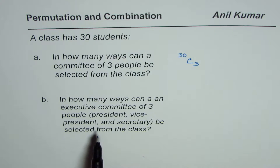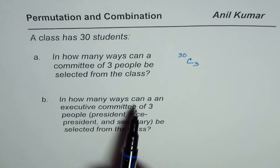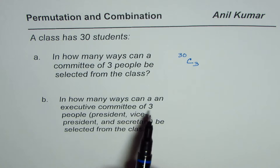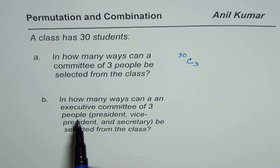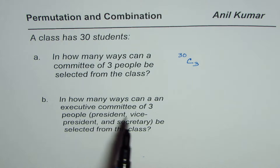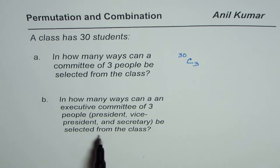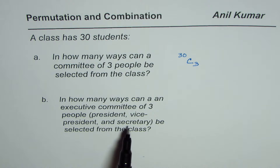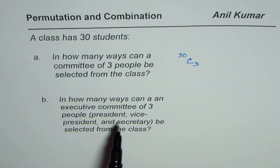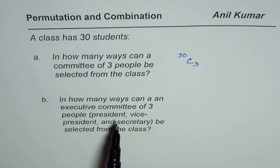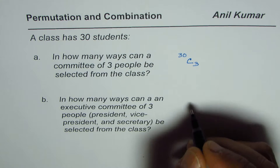In the second part: in how many ways can an executive committee of three people — president, vice president, and secretary — be selected from the class? These are three different positions, therefore the order matters. And this is a permutation case.